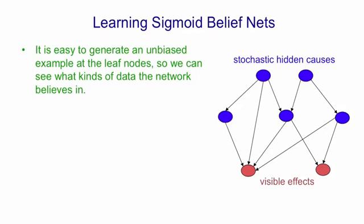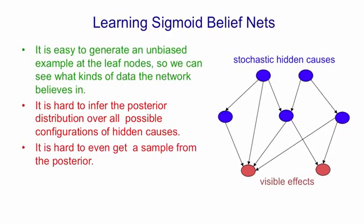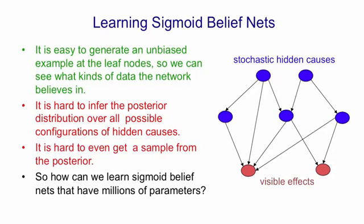It's easy because it's a causal model. However, even if we know the weights, it's hard to infer the posterior distribution over hidden causes when we observe the visible effects. The reason for this is that the number of possible patterns of hidden causes is exponential in the number of hidden nodes. It's hard even to get a sample from the posterior, which is what we need if we're going to do stochastic gradient descent. So given this difficulty in sampling from the posterior, it's hard to see how we can learn sigmoid belief nets with millions of parameters, which is what we'd like to do.